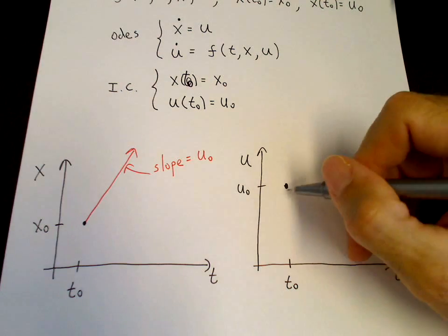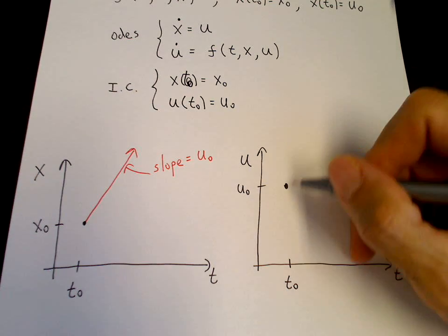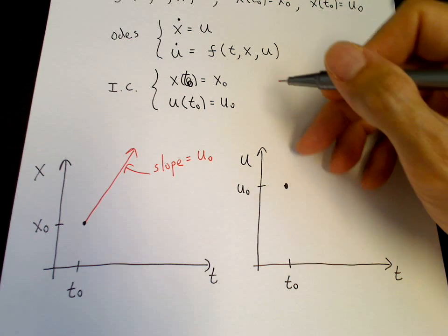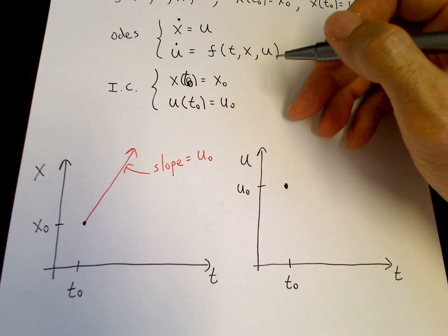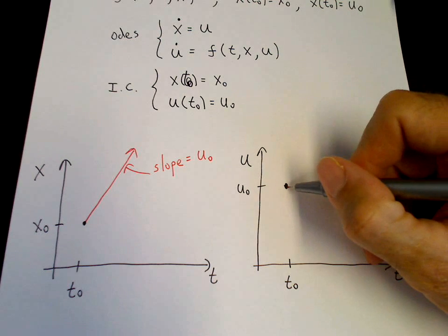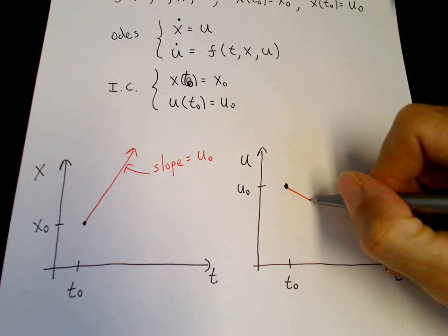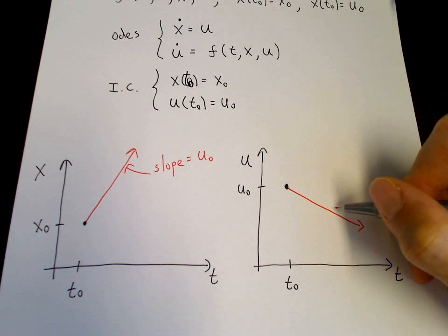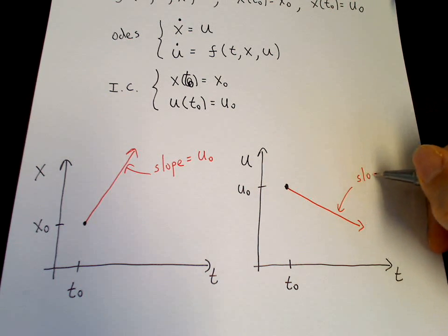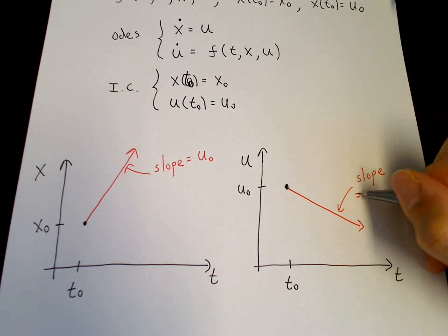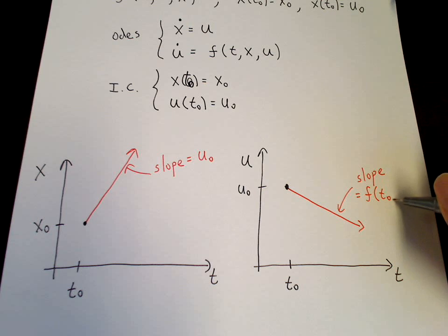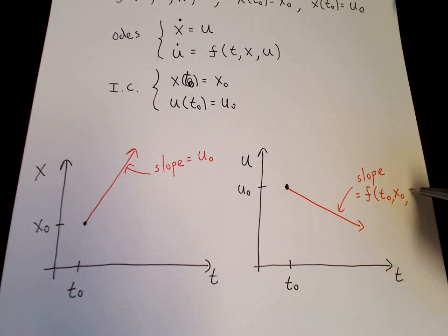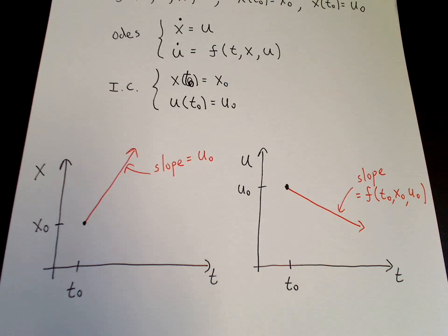And similarly here we can draw a tangent line. We don't know what f of t naught, x naught, u naught is. But for sake of argument let's say it's negative. So here it could be the tangent line. So the slope here of that line is equal to our right hand side at t naught, x naught, and u naught.